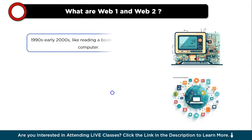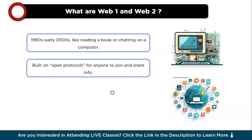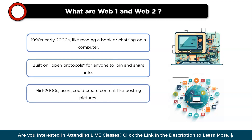Before understanding Web 3, let's understand Web 1 and Web 2. Imagine the internet as a big playground. Web 1 was like the first version of this playground, starting in the 1990s and going into the early 2000s. During this time, people mainly used the internet to read web pages and talk to each other — like reading a book or chatting with friends, but on a computer. Web 1 was built on open protocols, meaning anyone could join and share information.